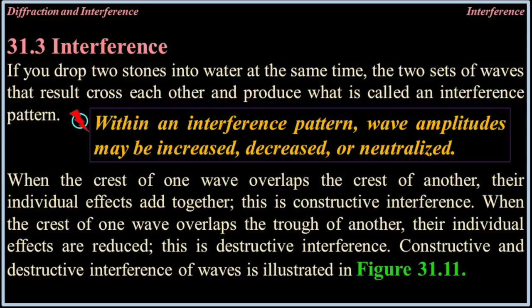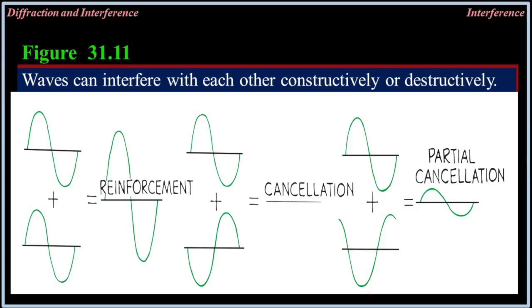31.3 Interference. If you drop two stones into water at the same time, the two sets of waves that result cross each other and produce what is called an interference pattern. Within an interference pattern, wave amplitudes may be increased, decreased, or neutralized. When the crest of one wave overlaps the crest of another, their individual effects add together — this is constructive interference. When the crest of one wave overlaps the trough of another, their individual effects are reduced — this is destructive interference. Constructive and destructive interference of waves is illustrated in figure 31.11.